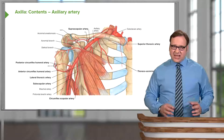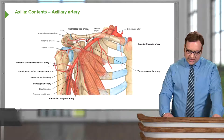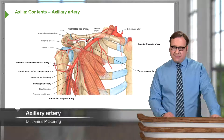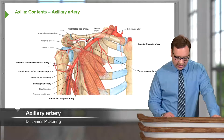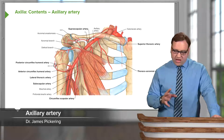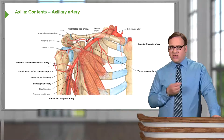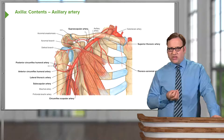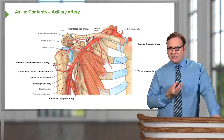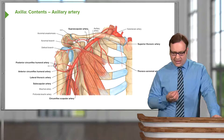If we look at the contents of the axilla, the main blood vessel is the axillary artery. The axillary artery is a direct continuation of the subclavian artery as it passes into the axilla.